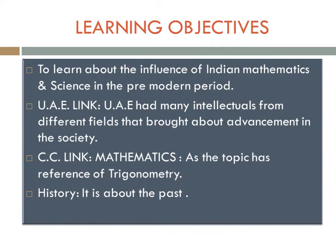Here we have the learning objectives: to learn about the influence of Indian mathematics and science in the pre-modern period. The UAE link — UAE had many intellectuals from different fields that brought about advancement in the society. The cross-curricular link covers mathematics with reference to trigonometry, and also deals with history because it is about the past.